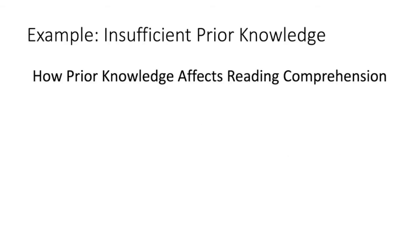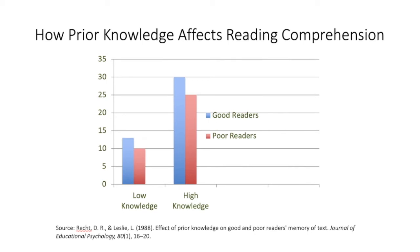Many studies have examined how prior knowledge affects learning. In one study, researchers examined how prior knowledge affects reading comprehension. They gave students new information to read and then tested their comprehension. Some students were good readers who typically score well on comprehension tests and some were poor readers who did poorly. The topic of the information was baseball — some students knew a lot about baseball and some knew very little. This graph shows the results: high knowledge students scored more than twice that of low knowledge students. In fact, poor readers who knew a lot about baseball understood much more than good readers who knew very little.